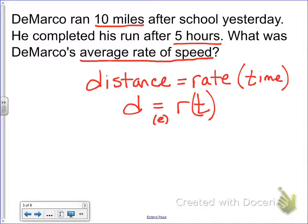But this is the equation we're going to use to figure out either how far we went, the distance, how fast we went, the rate, or how long it took, the time. And so if we know two of these things, we can find the missing one.